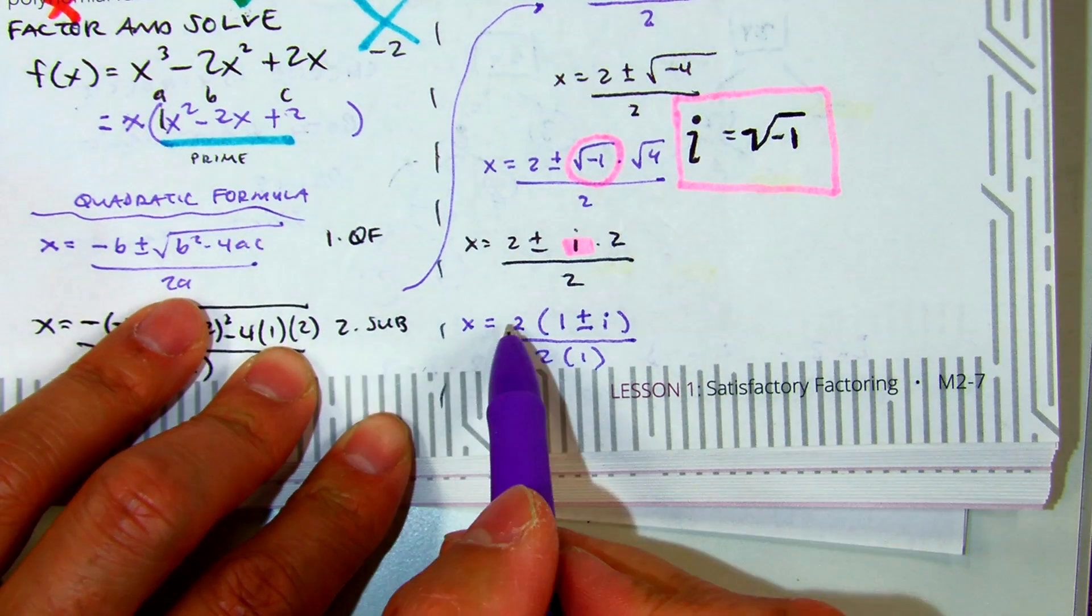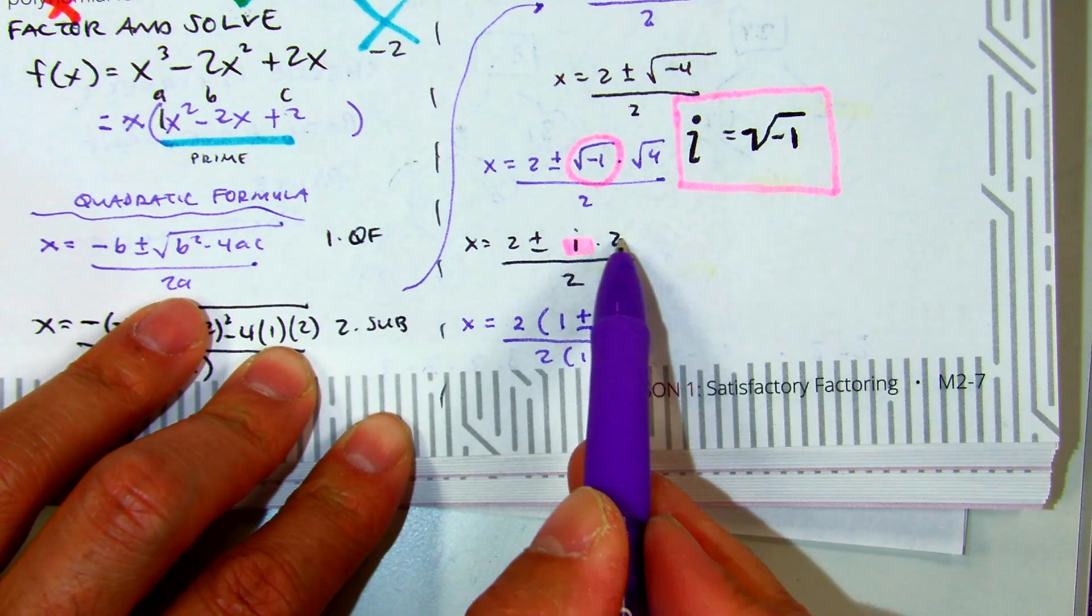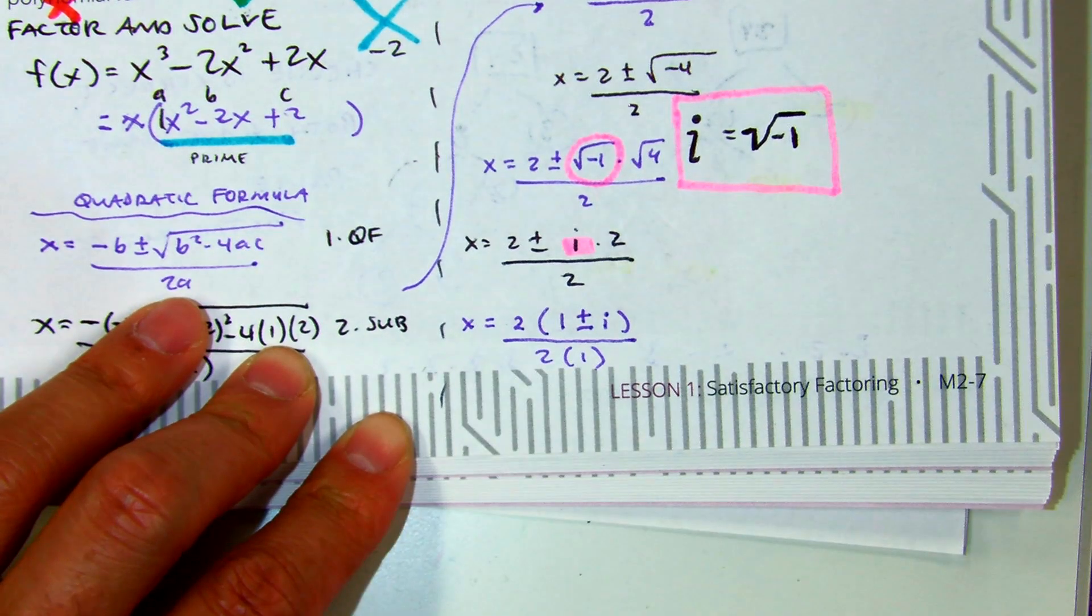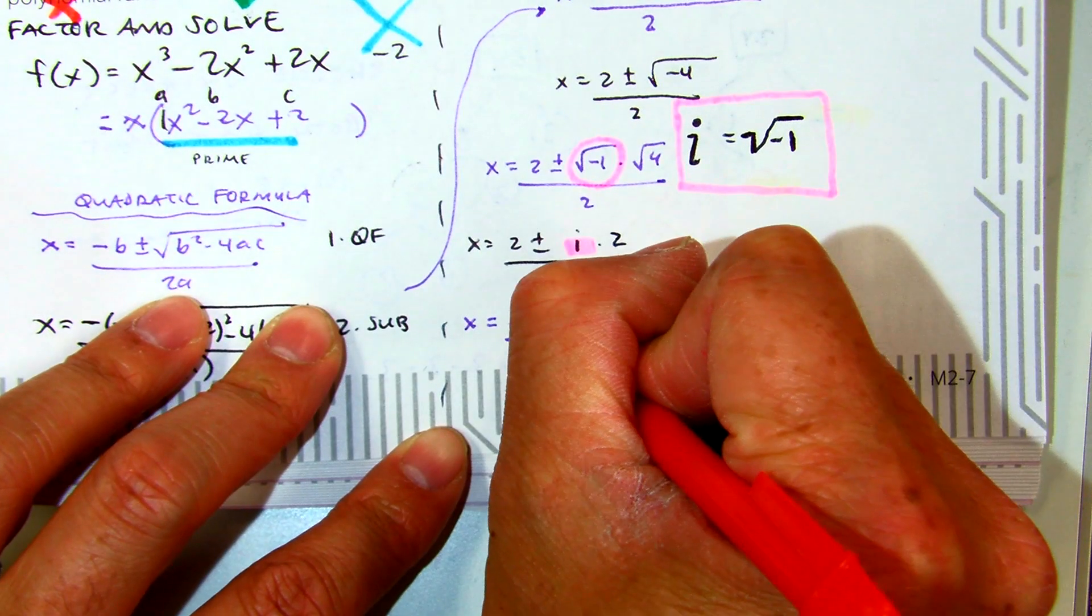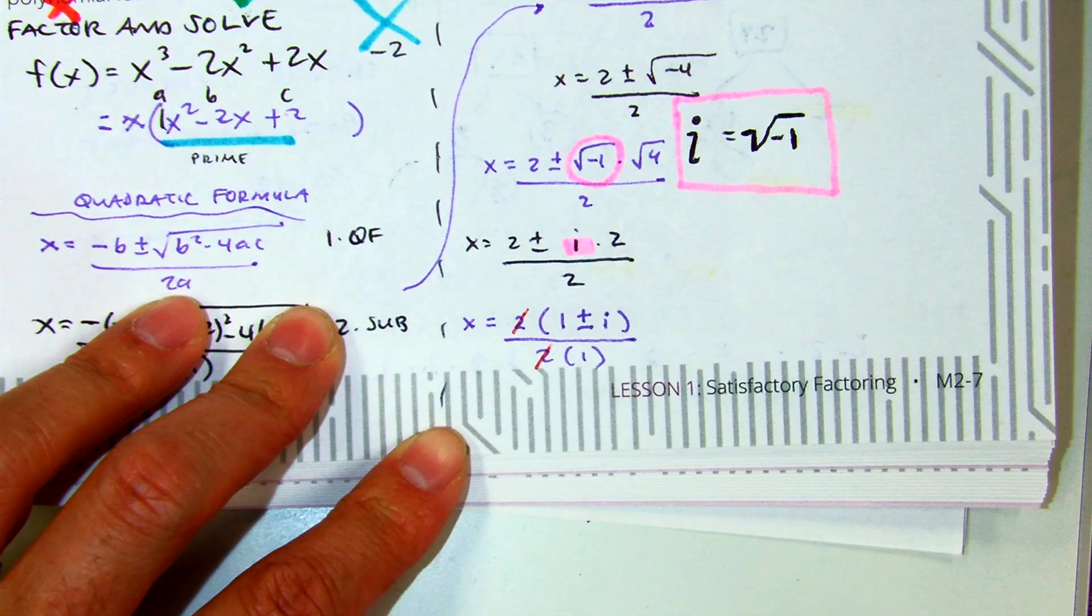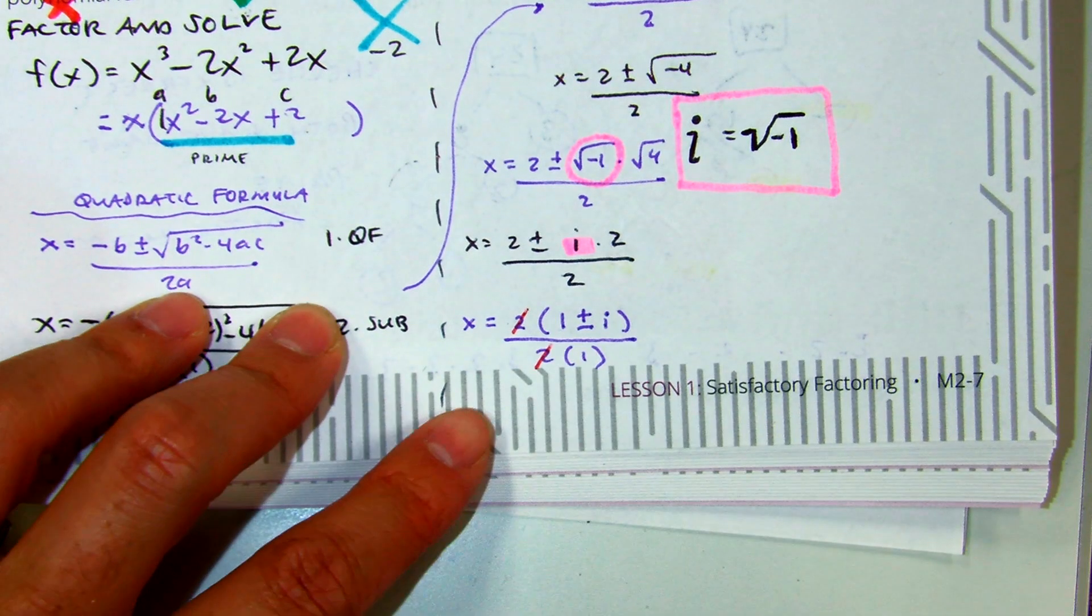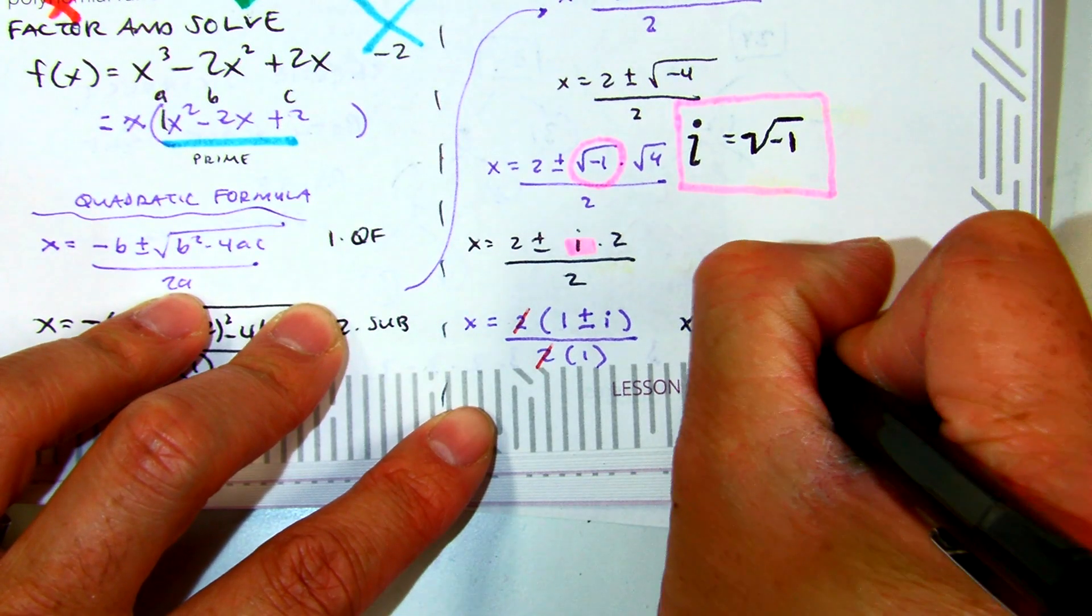Right? Because 2 times 1 is 2, 2 times i is 2i, and 2 is 2 times 1. The reason I did that is I can cancel out my 2s. 2 divided by 2 is 1, so I have this grand answer of x equals 1 plus or minus i.